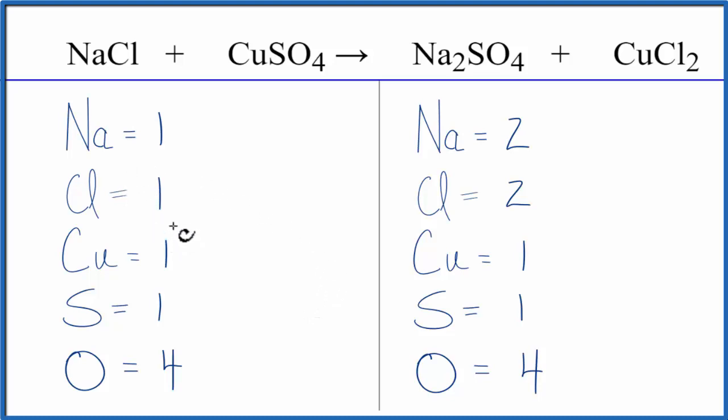It looks like, to balance the equation, the only thing that's different, we have one sodium here and two on the product side, one chlorine, and then on the product side, two. So if we put a coefficient of two in front of the NaCl, one times two, that would give us two sodiums.